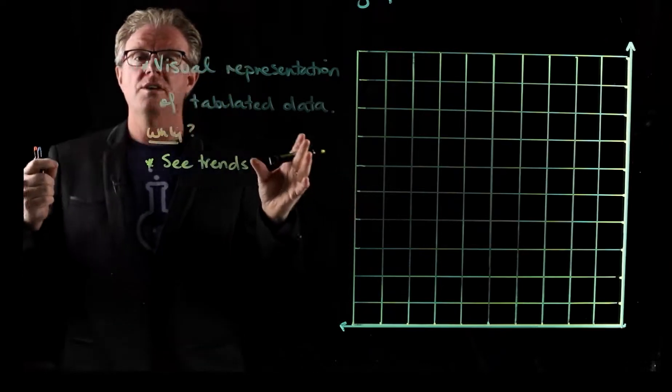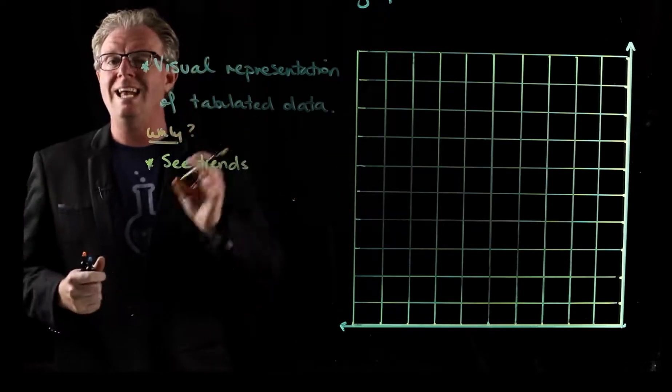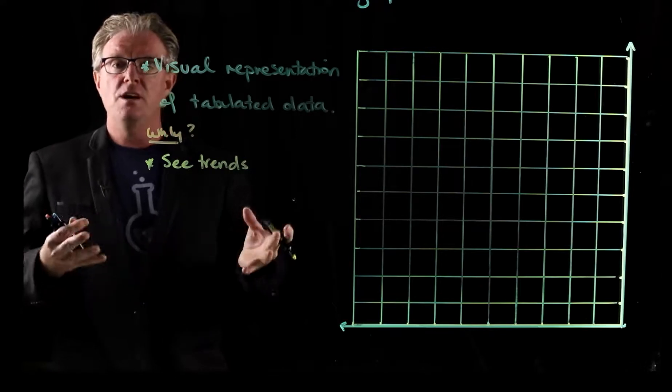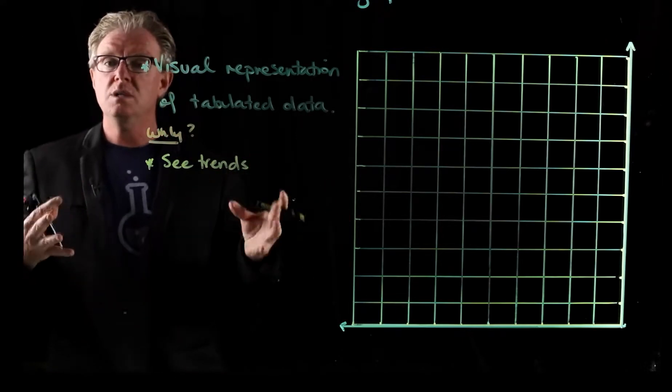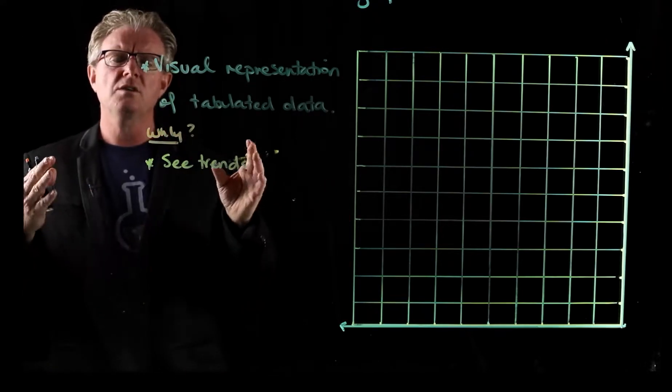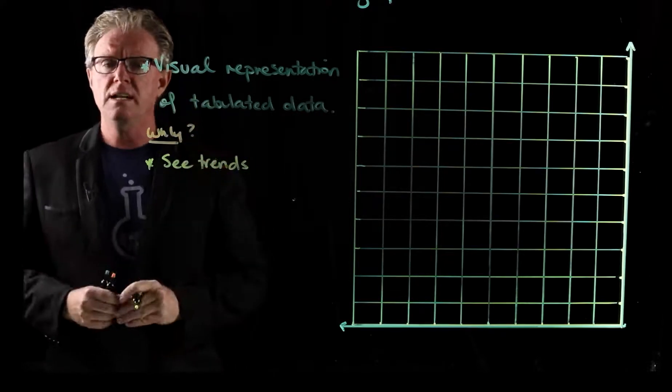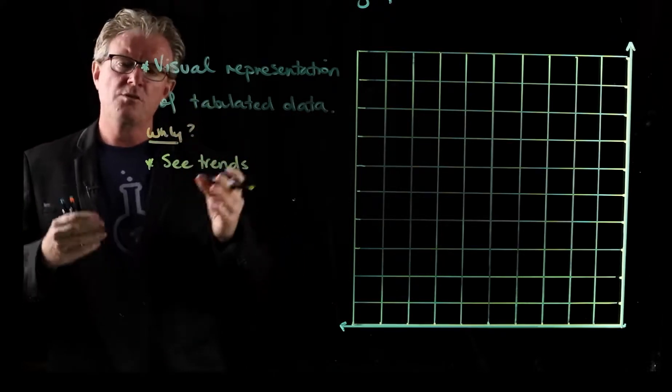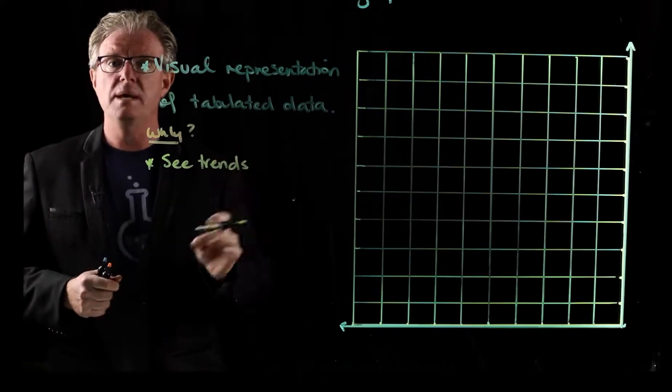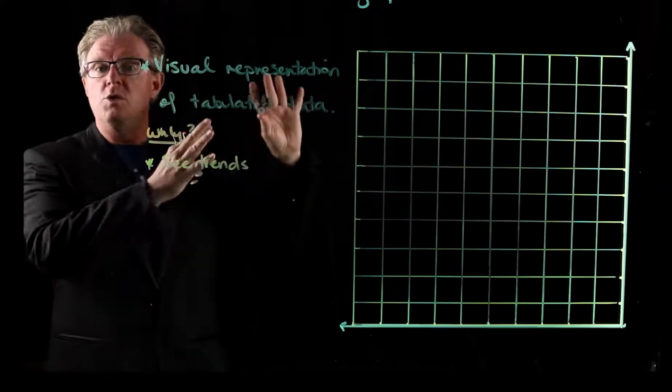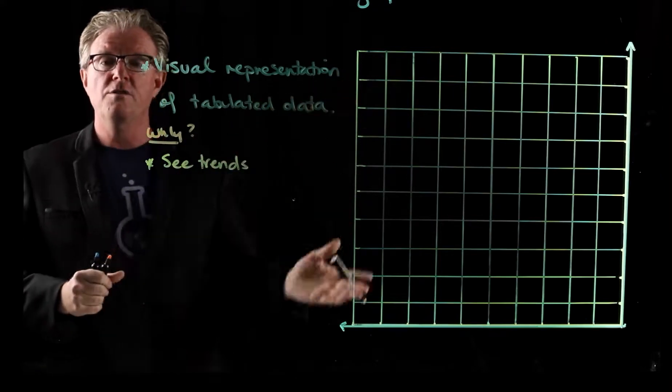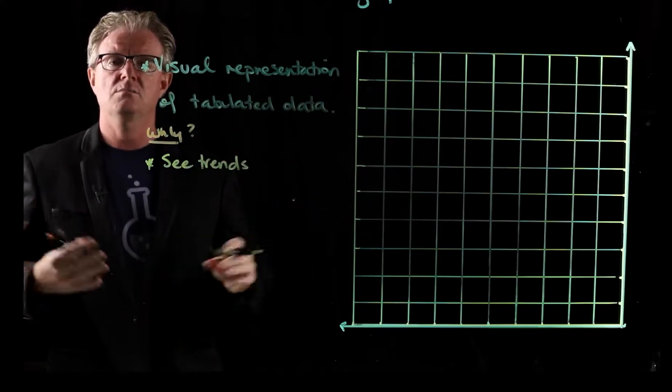Hopefully you've watched the series on variables, but remember a variable is anything that you can vary in an experiment. When you do an experiment you want to look at your variables and you want to change one variable, the one that you're investigating. That's called the independent variable. And then of course you want to measure a variable and that is the dependent variable. And then you have to control or keep a lot of variables the same to make it a fair test.